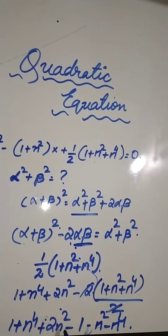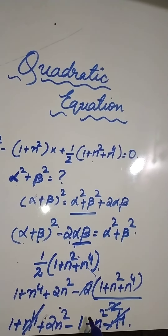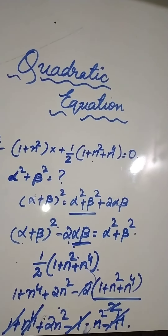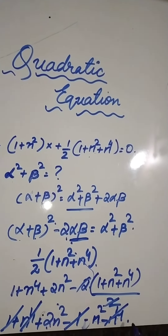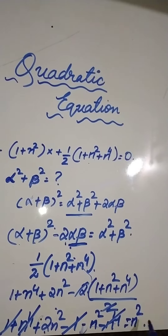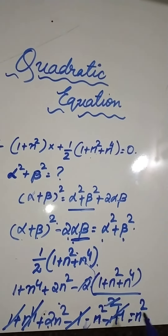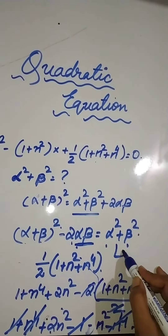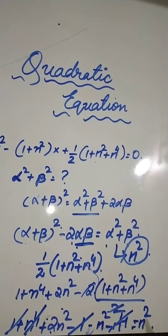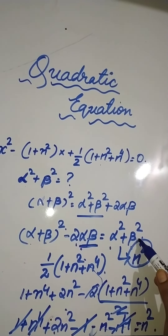Minus n⁴ and plus n⁴ cancel. Minus 1 and plus 1 cancel. So we have 2n² minus n², which is equal to n². So the value of α² + β² is equal to n².